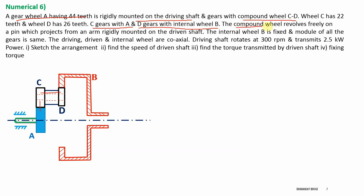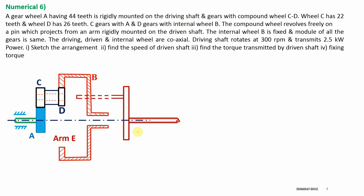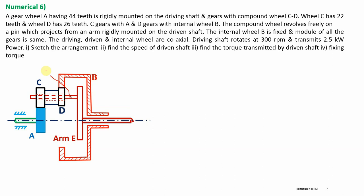The compound wheel CD revolves freely on a pin which projects from an arm rigidly mounted on the driven shaft. The driving, driven, and internal wheel are coaxial. Gear A and gear B are already shown as coaxial. The driven shaft is also coaxial with both gears and carries an arm with a pin on which compound wheel CD revolves. This arm is connected to the driven shaft.